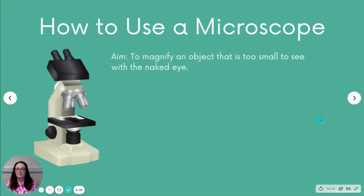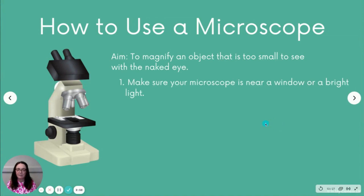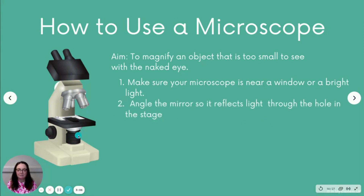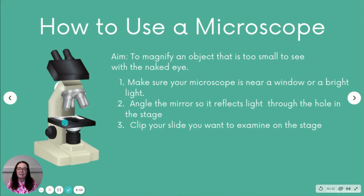You need to know how to use the microscope, remembering that the main aim is to magnify objects far too small to see with the naked eye — that's why we use it to look at cells. Make sure your microscope is near a window or bright light so that light can hit the mirror. Angle the mirror so it reflects light up through the gap in the stage, and use the two silver clips to clip your slide specimen to the stage.